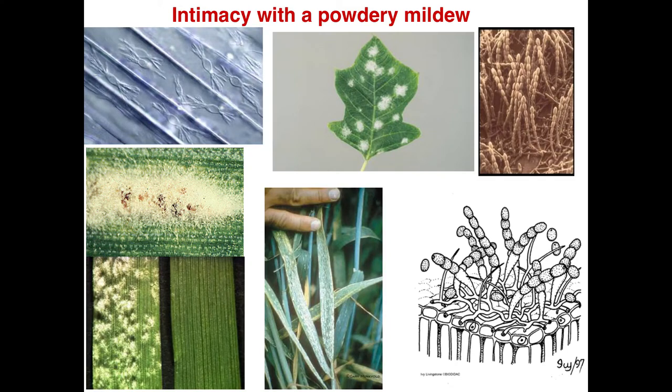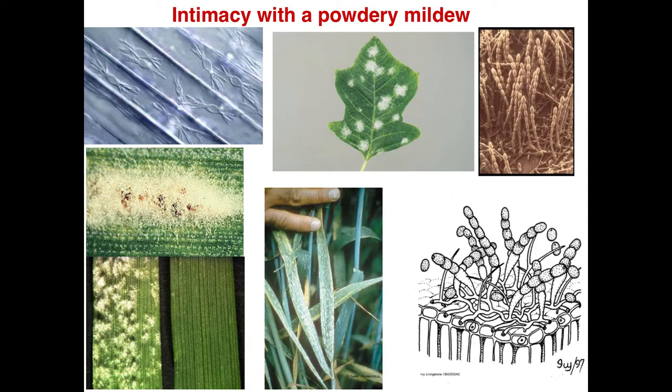Powdery mildews also make very elaborate haustoria — like little aliens within the cell — with tremendous increase in surface area through finger-like projections. You get white fluffy spore masses from this colonisation. Remarkably, this pathogen only grows in the top layer of cells, the epidermal cells — it doesn't get into the mesophyll cells where photosynthesis occurs. Nevertheless, tremendous proliferation of conidia then spreads the pathogen to other uninfected plants.